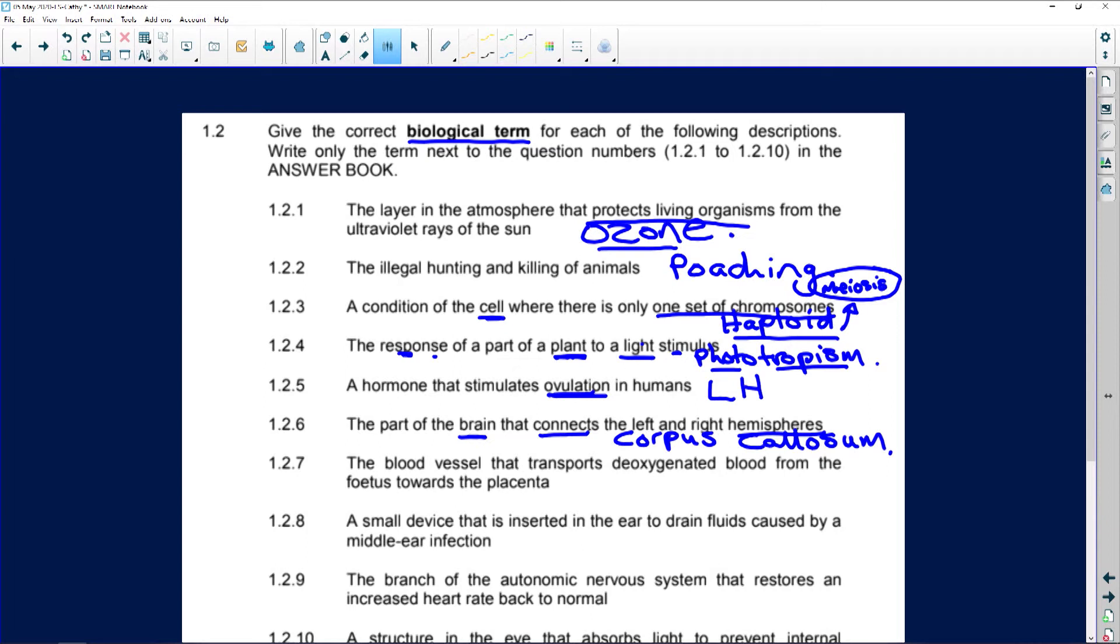Blood vessels, the blood vessels that transports deoxygenated blood, so it's blood carrying carbon dioxide from the fetus to the placenta, is going to be the umbilical artery. Now, why the artery when it's carrying deoxygenated blood? It's simple. It is leaving the fetus's heart.